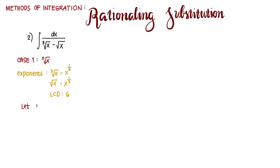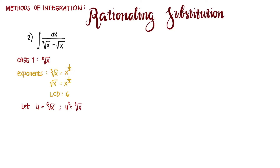We let u be equal to the 6th root of x, which is x to the power of 1/6. To replace the cube root of x, we raise the equation to the power of 2, giving u² equals cube root of x. Raising to the power of 3 gives u³ equals square root of x. To remove the radical sign entirely, we raise to the power of 6, so u⁶ equals x. Then we find the differential: dx equals 6u⁵ du.